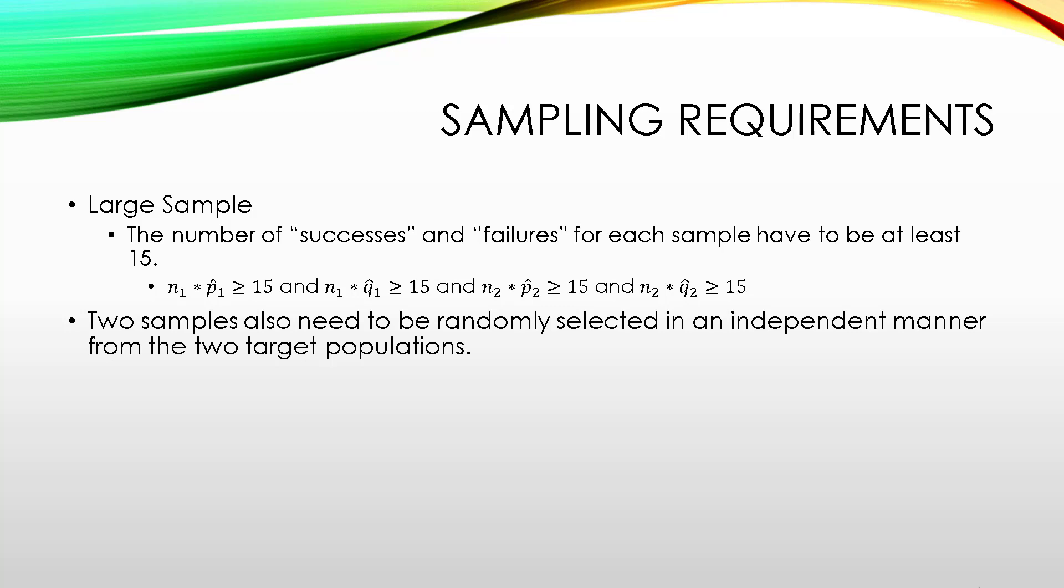You can check this by doing n₁ times p̂₁, n₁ times q̂₁, n₂ times p̂₂, and n₂ times q̂₂, and checking to see each of those are greater than or equal to 15. The two samples also need to be randomly selected in an independent manner from the two target populations.